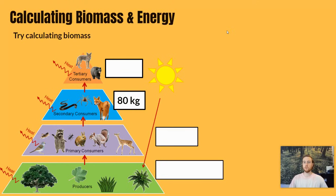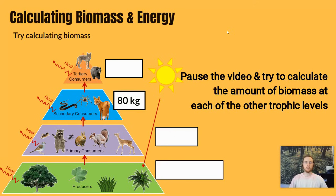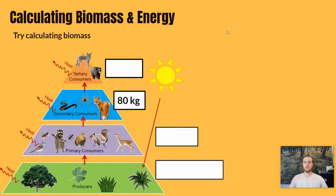Since the 10% rule also applies to biomass, we can do the same type of calculation to determine how much biomass is found at each level. Starting with 80 kilograms at the secondary consumer level, we move the decimal left to find 8 kilograms at the tertiary consumer level. Going down the pyramid, we move the decimal to the right — giving us 800 kilograms at the primary consumer level and 8,000 kilograms at the primary producer level.